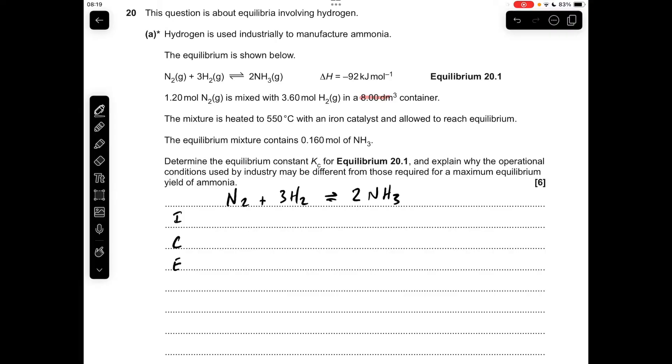You'll notice I've written the ICE acronym down because this is an ICE calculation. The first thing we need to do is work out the initial moles of the reactants and product. We're starting with 1.2 moles of nitrogen, 3.6 moles of hydrogen, and obviously at the start there won't be any ammonia. We're told the equilibrium mixture contains 0.16 moles of ammonia.